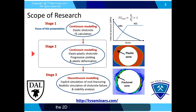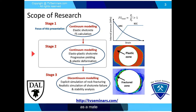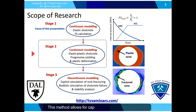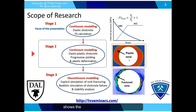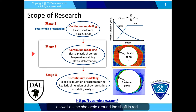In the second stage, the 2D finite element model is used to simulate shotcrete as a material model with elastoplastic properties. This method allows for capturing progressive yielding and plastic deformation of shotcrete. This figure shows the plastic zone in the rock mass as well as the shotcrete around the shaft in red.